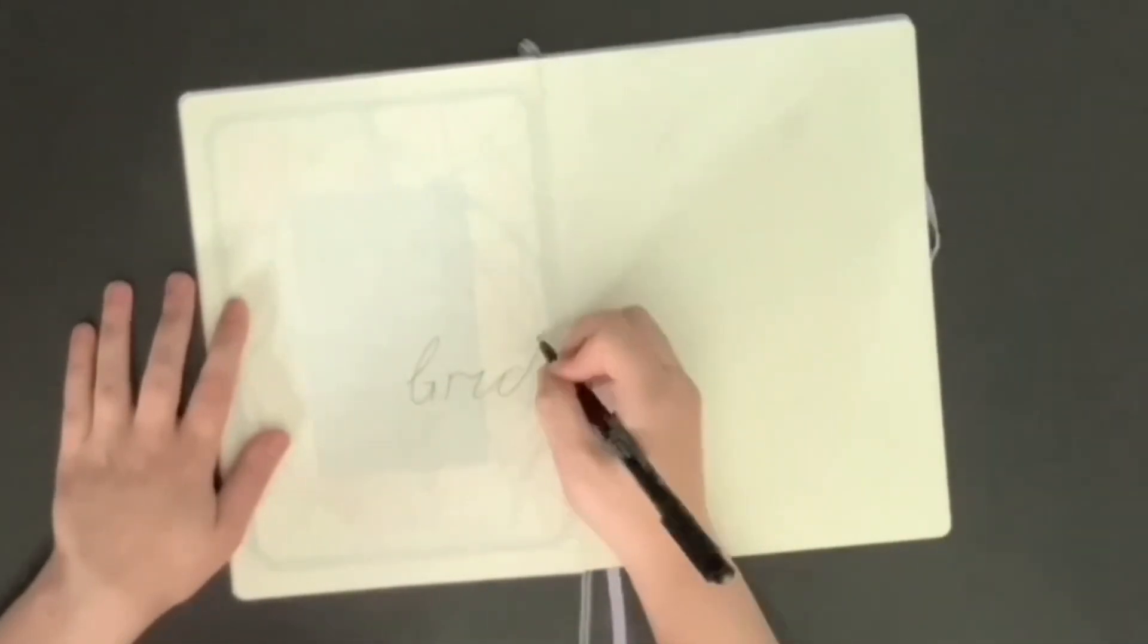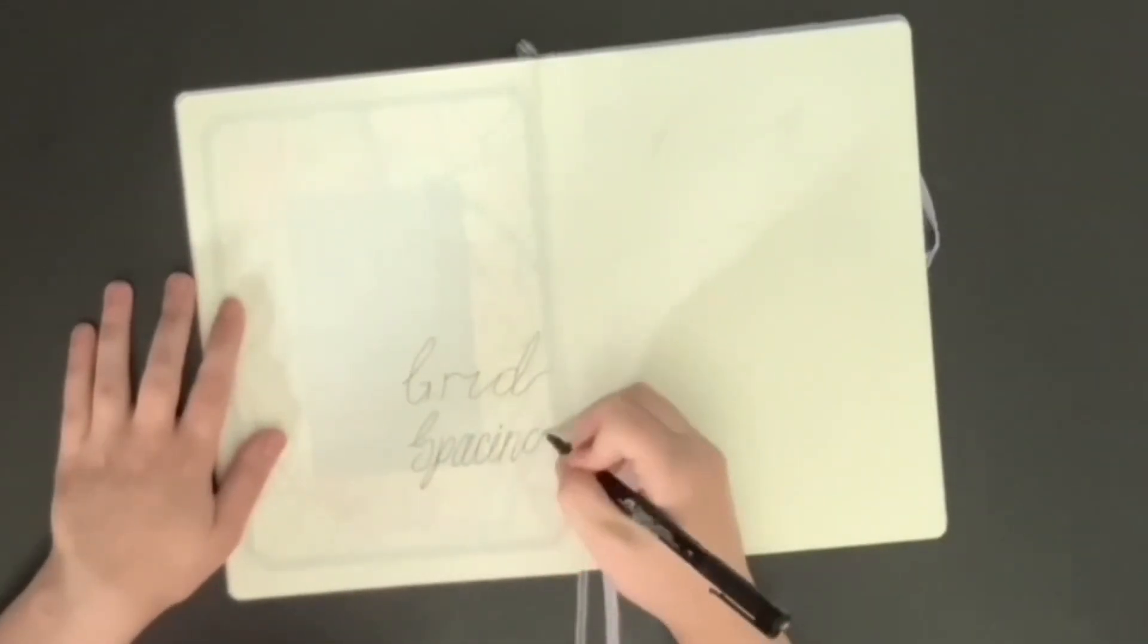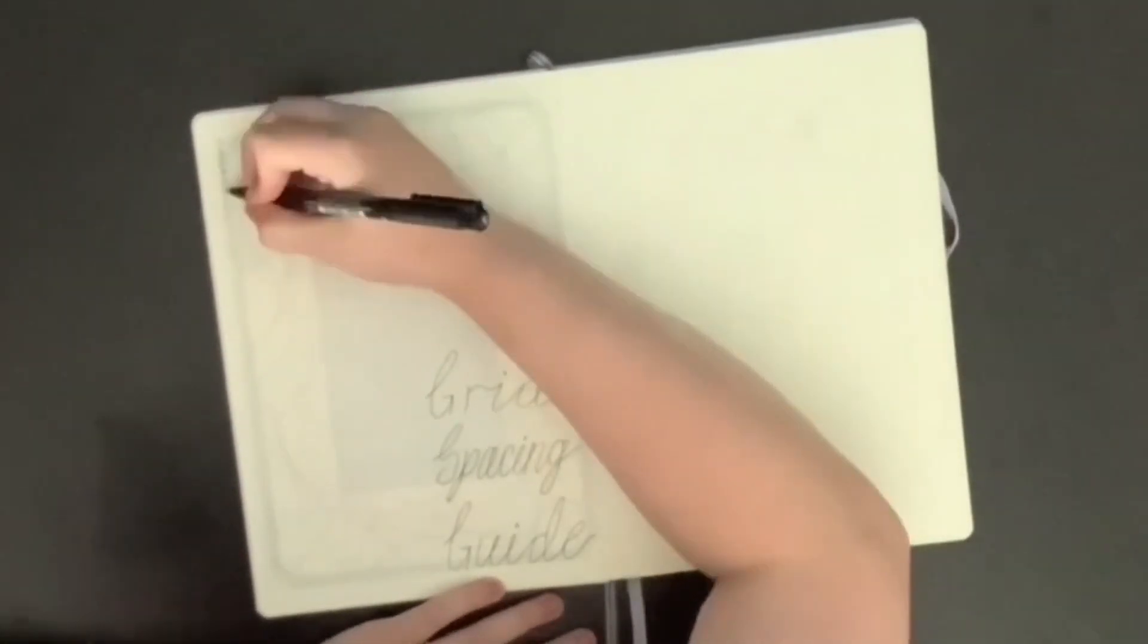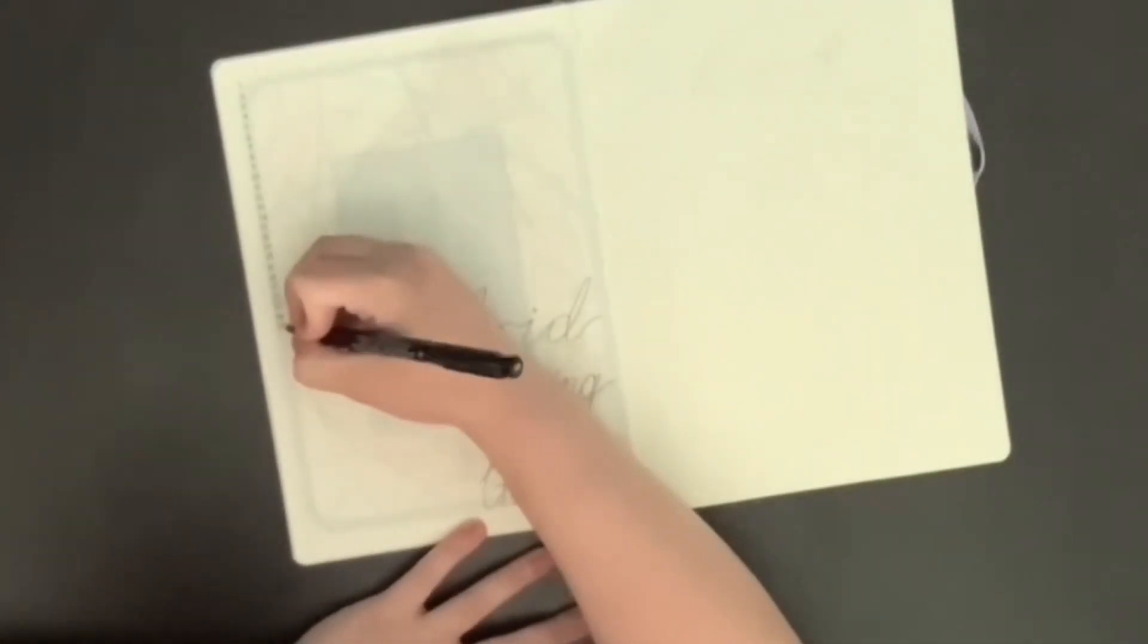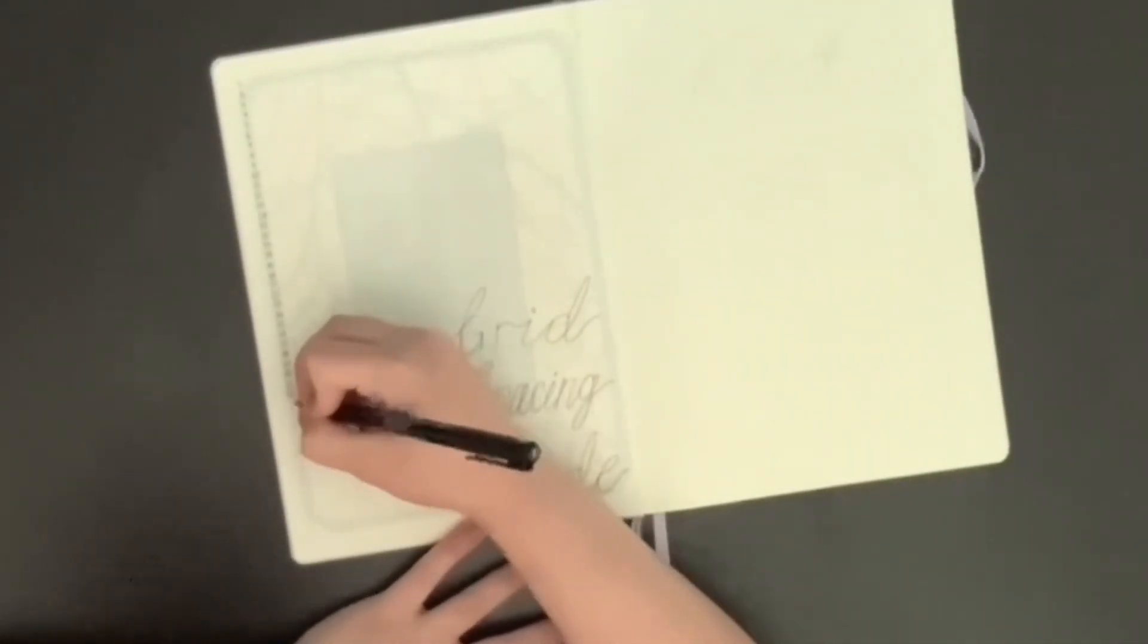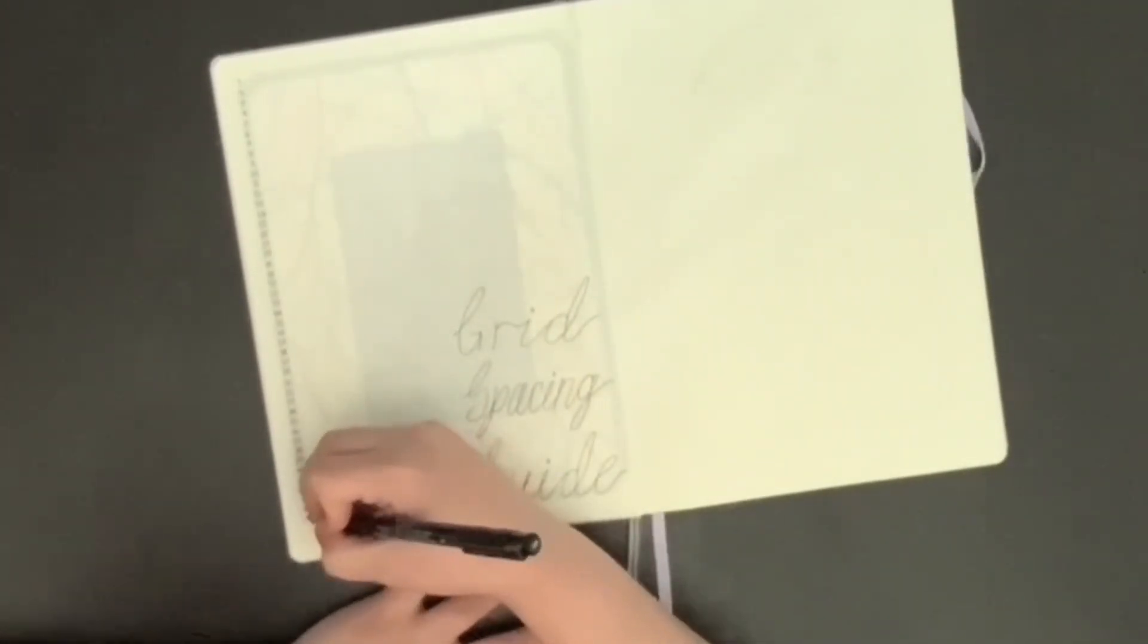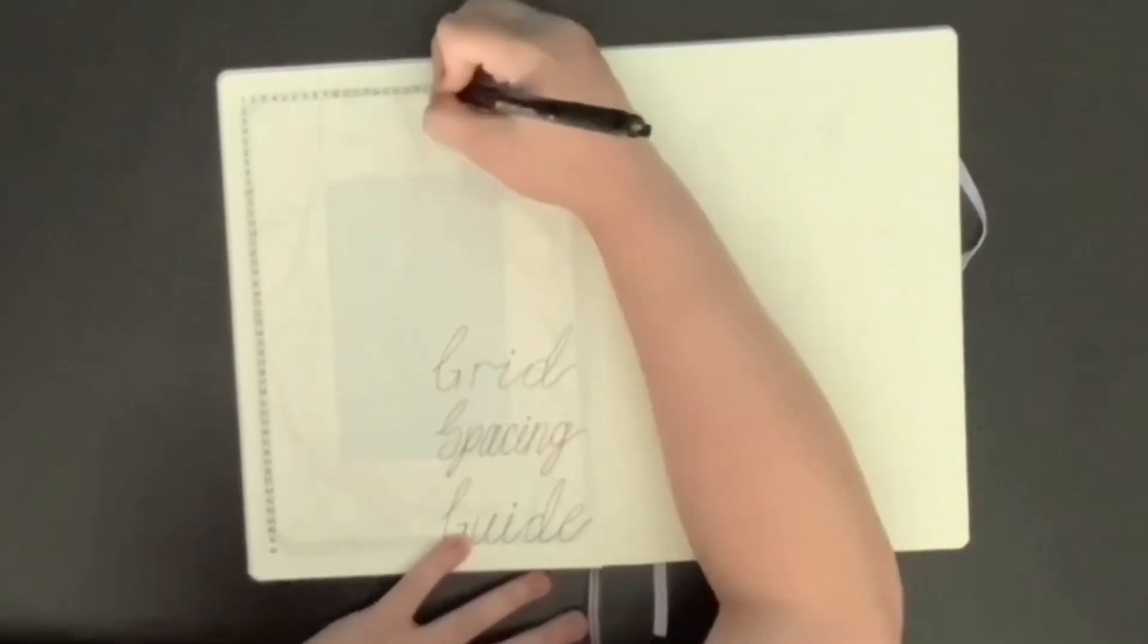So getting into the setup, the first page I wanted to do was a grid spacing guide. For the grid spacing guide, all I did was take a fine liner and number all of the boxes going horizontally and vertically. And then I marked out ahead of time the halfway point.